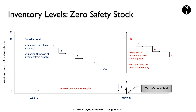In the scenario on the screen, this company starts with 10 weeks of inventory and as the weeks go by, the inventory is slowly depleted. If demand for this inventory is constant, then we would run out of inventory in exactly 10 weeks.